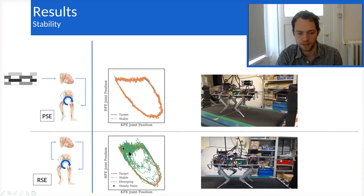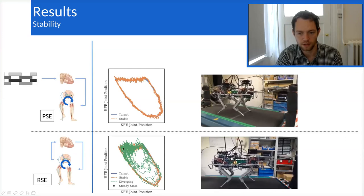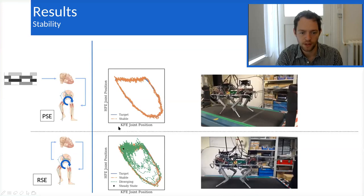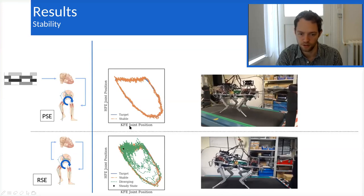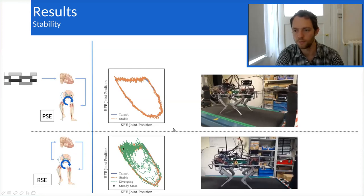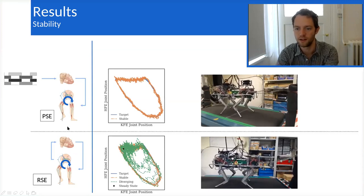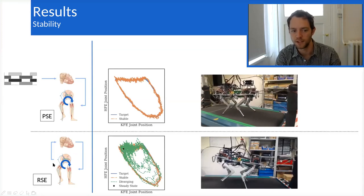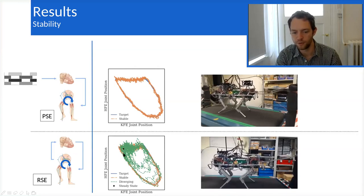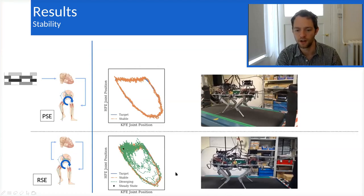This is another representation of the same conclusion. On the bottom part, you can see the RSE estimator and the upper part, the PSE estimator. You see that if we represent the limit cycle in the knee flexion-extension joint position and hip flexion-extension joint position, we have a good attractor if you are using an external stabilization module like using PSE, but this attractor actually diverges either to chaotic behavior or to a steady state if you are using RSE.